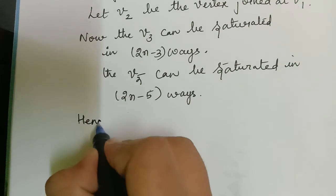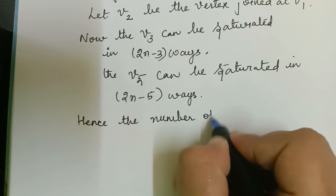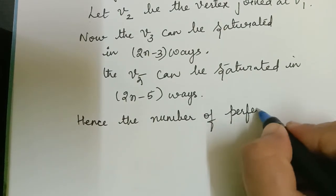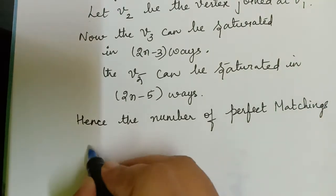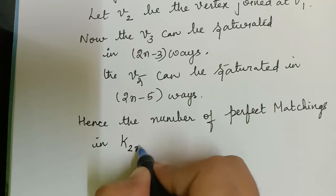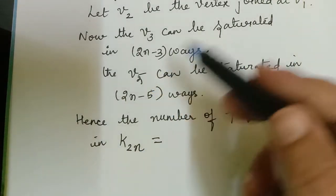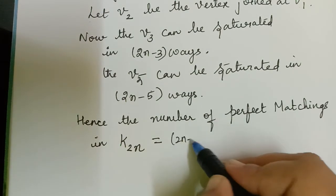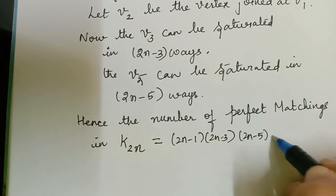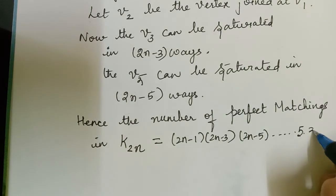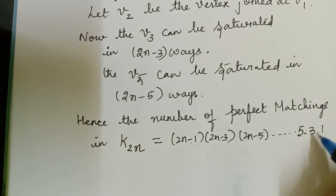Hence, the number of perfect matchings in K₂ₙ — the complete graph with 2n vertices — is equal to the product of these counts: (2n−1) × (2n−3) × (2n−5) × ··· × 5 × 3 × 1. These are all the odd numbers down to 1.